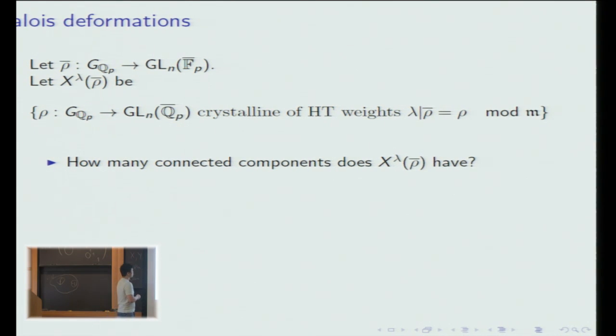This is a very important object in the p-adic Langlands program. One question which comes up in the Taylor-Wiles patching method is: how many connected components does this deformation space have? This is in the rigid analytic sense. This question is, as far as I know, open even for GL_2, so when n is 2. An even simpler question is just: when is this space nonempty? This has a rather satisfactory answer in the case n equals 2, which motivates the rest of this talk.